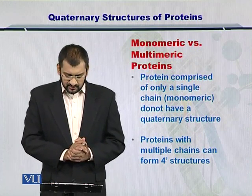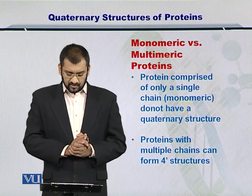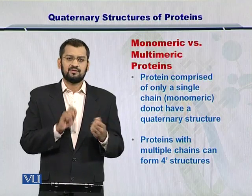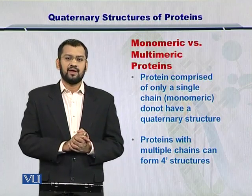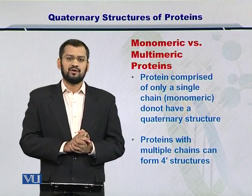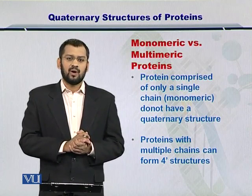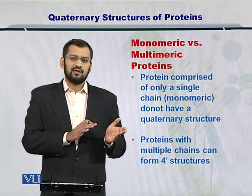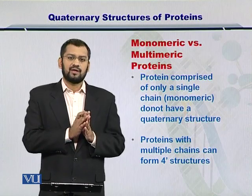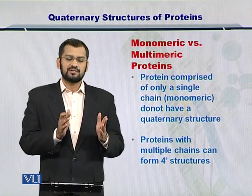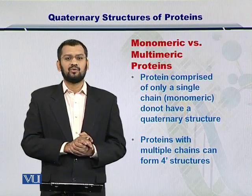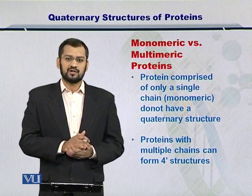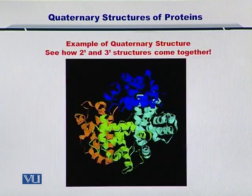Proteins comprising a single chain of amino acids can have a monomeric structure, or the tertiary structure, while polypeptide chains which act together to make a structure will give rise to a quaternary structure, and that will be the overall structure of that protein.